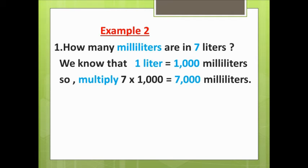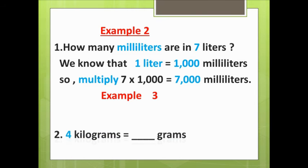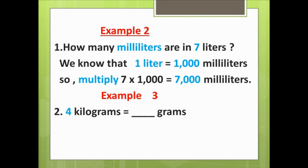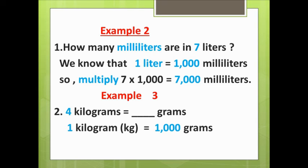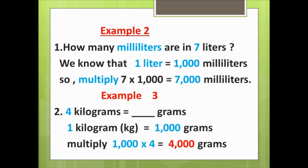Example three: how many grams are in four kilograms? We know that one kilogram equals one thousand grams, so multiply one thousand times four to get four thousand grams.